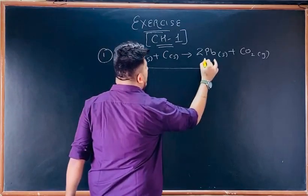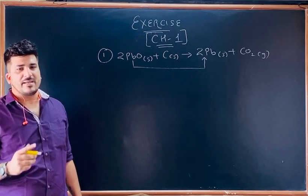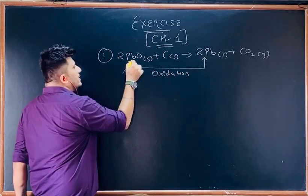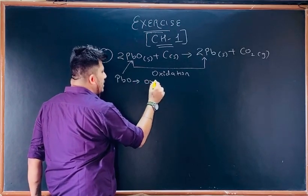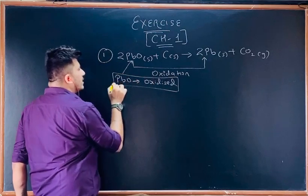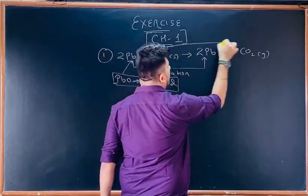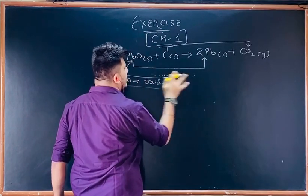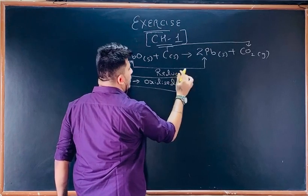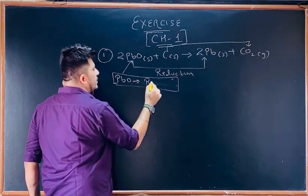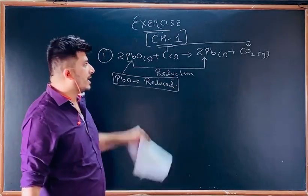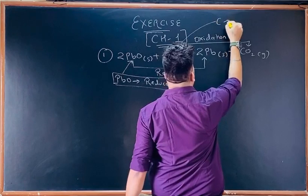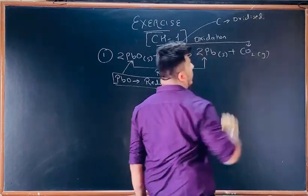You can see PbO is becoming Pb — that means oxygen is removed from this compound, so this reaction is a reduction reaction. PbO is getting reduced. Similarly, carbon (C) is becoming CO₂ — that means oxygen is being added, so that is oxidation. Carbon is getting oxidized.